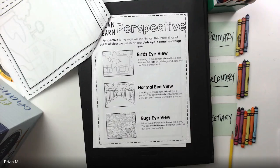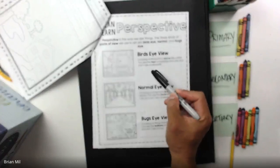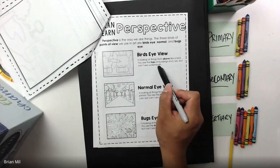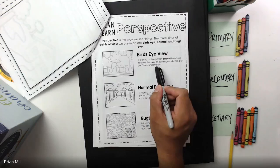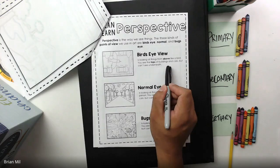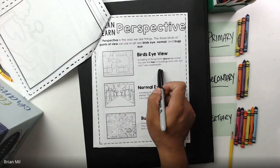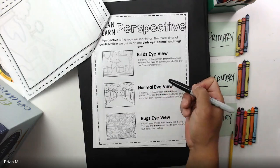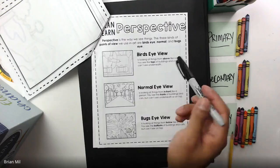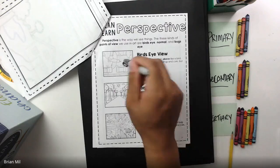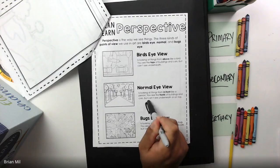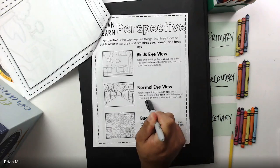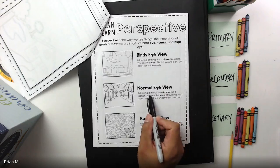Bird's eye view is when you look at things from above, like a bird. You can see the tops of buildings and cars but you can't see underneath. Basically, if you pretend to be a bird and you take a picture, that's kind of what you see — that's called bird's eye. Next up is normal eye view.